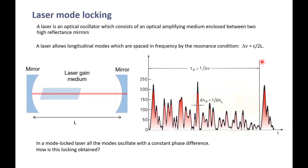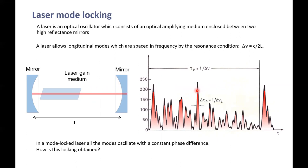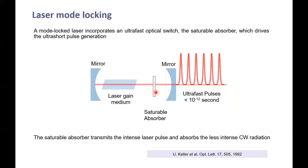One strategy is to isolate the most intense spike from all the random modes in the temporal domain — if I can filter it, I will have a very short temporal pulse. A way to do that is to use a saturable absorber. A saturable absorber is a medium that behaves as transparent when the laser intensity is very high, and as an absorber when the intensity is very low. This medium will therefore only be transparent for the most intense peak, while absorbing the rest of the radiation. By inserting this, I isolate one of those spikes and further amplify it, so at the output I get very short pulses.